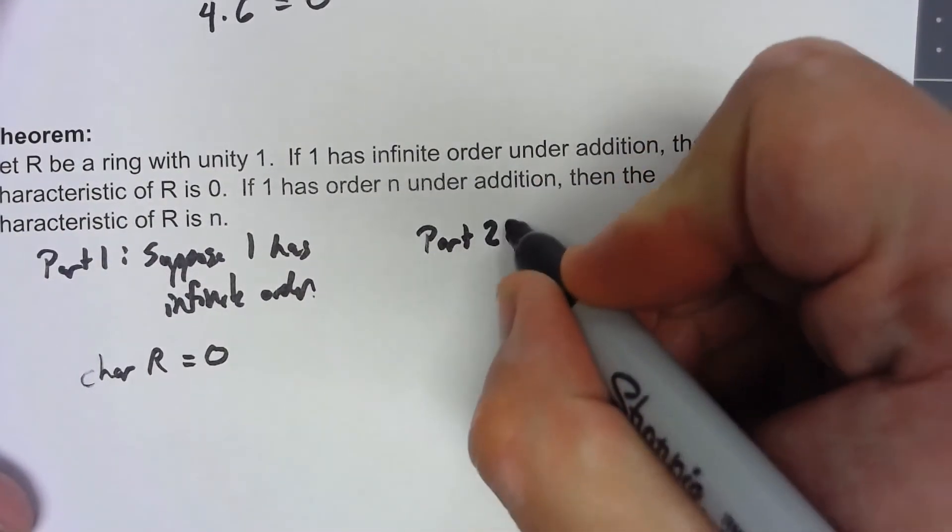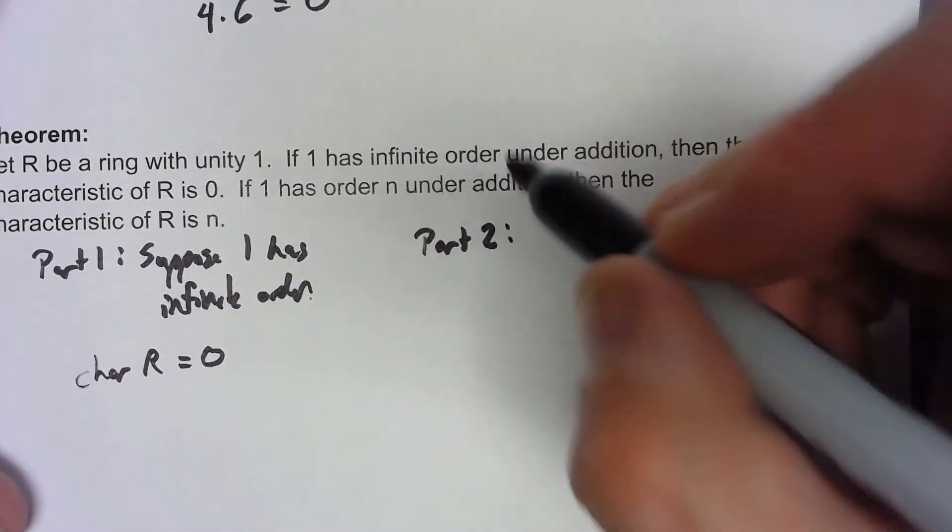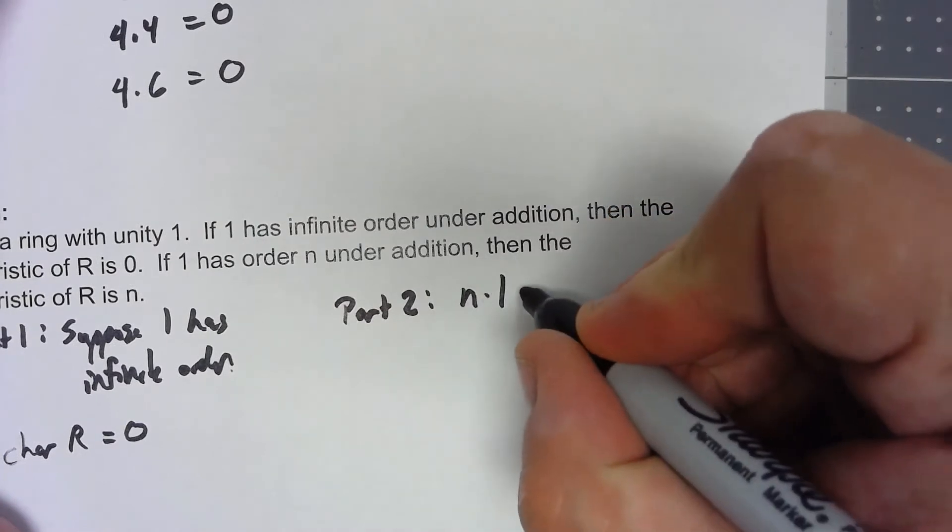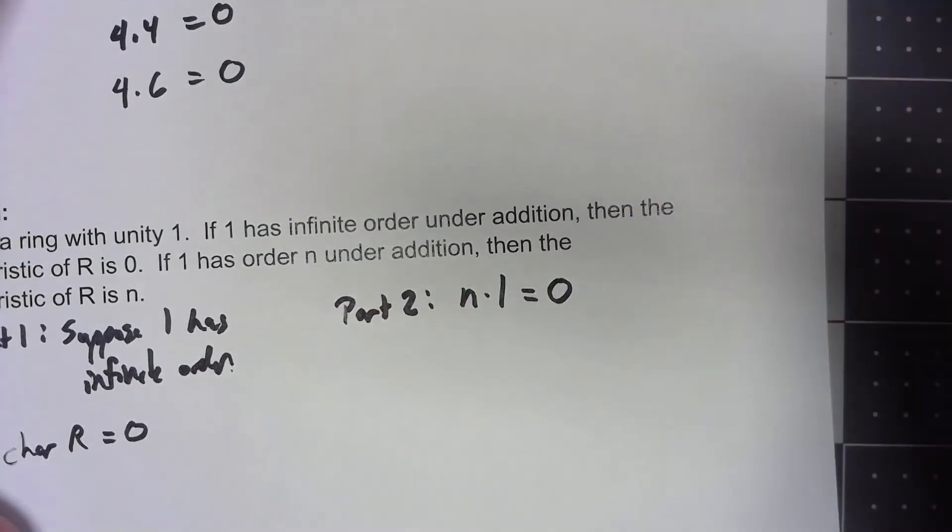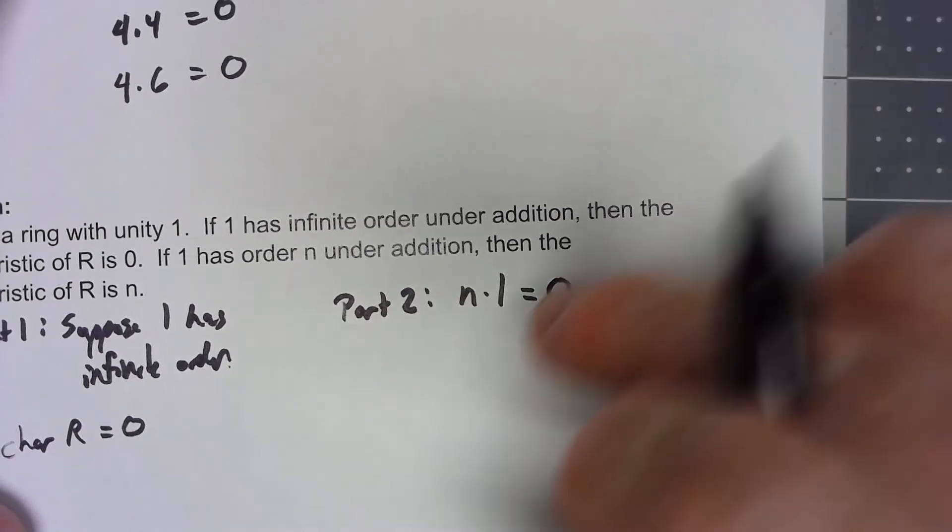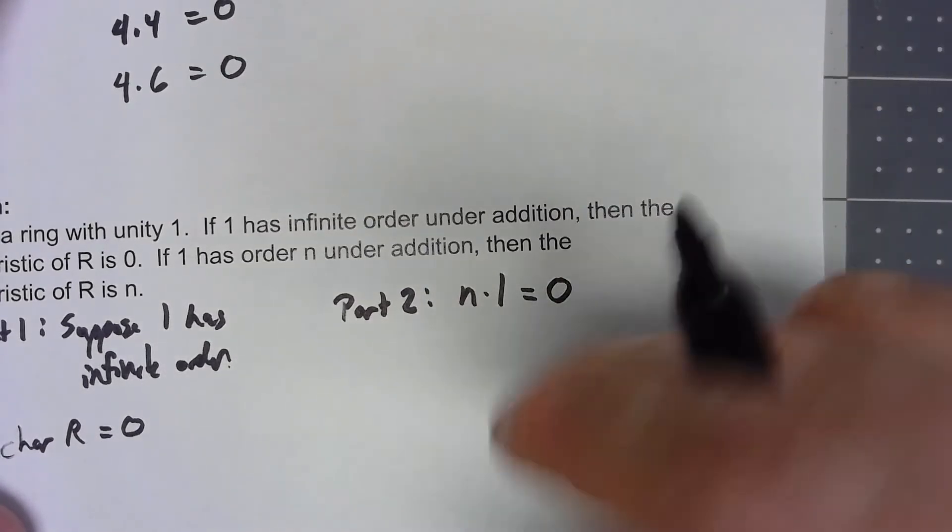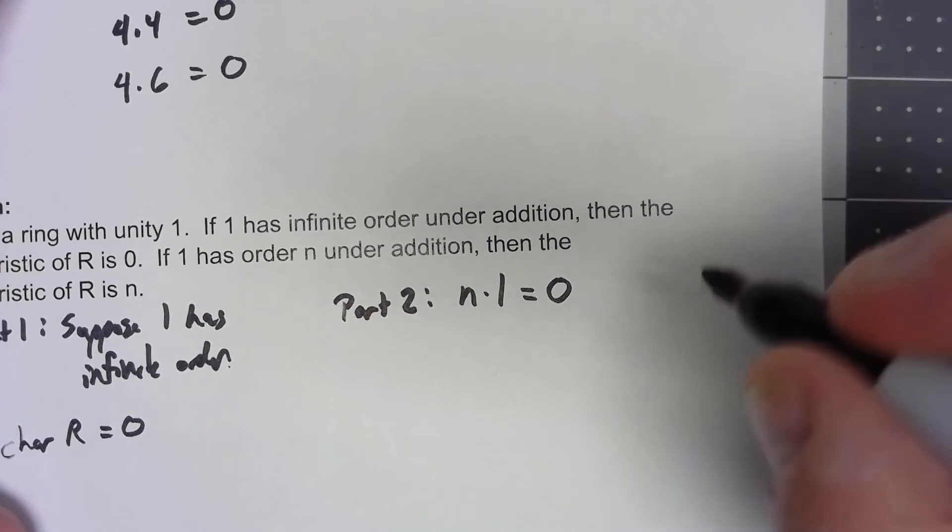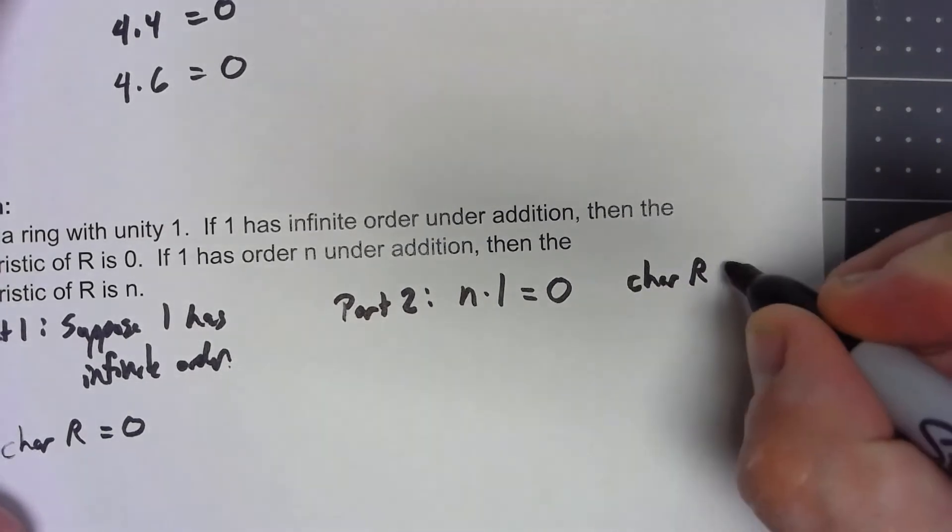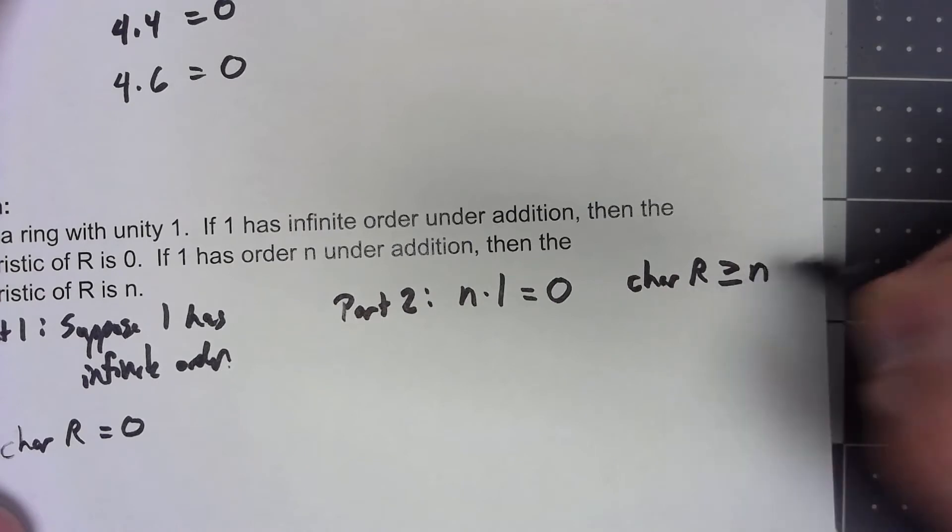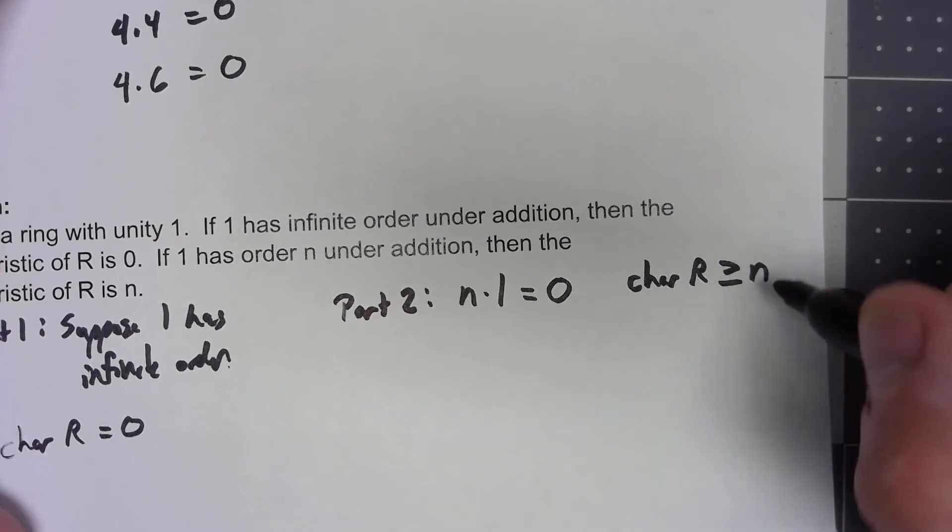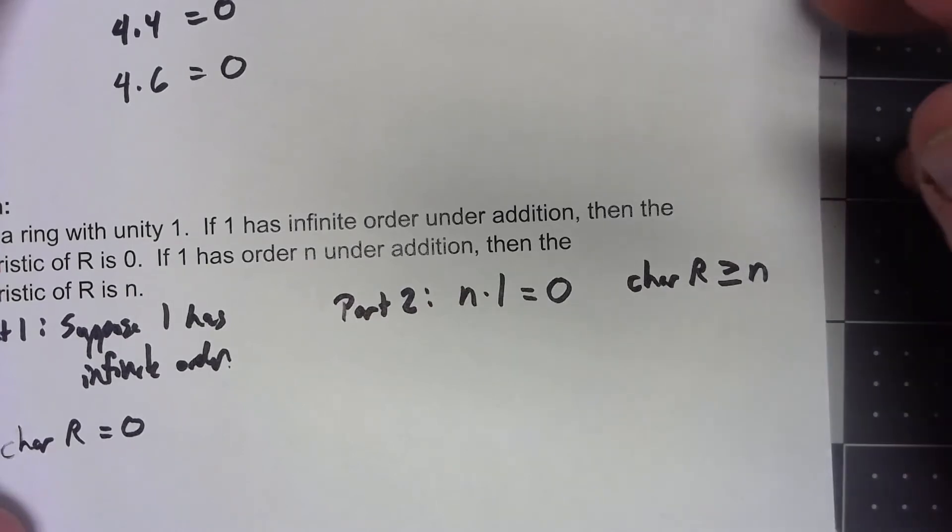Part two is a little bit more complicated. Suppose that 1 has order n under addition. So that means that n times 1 has to equal 0, and no smaller number would work. Now right away, because that's the smallest integer that works for 1, that means that the characteristic of the ring is greater than or equal to n. It can't be anything smaller; it could be something bigger. But if I can show that n works for any other element, then it has to be it for the whole ring.